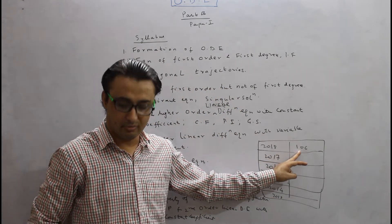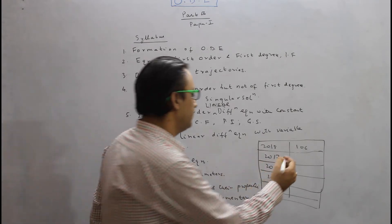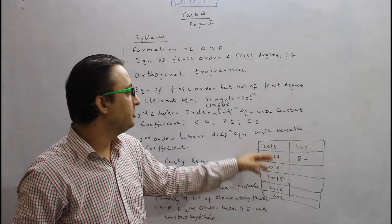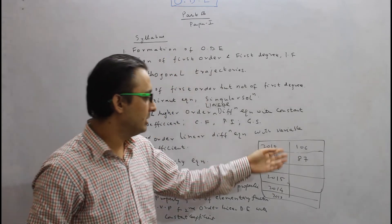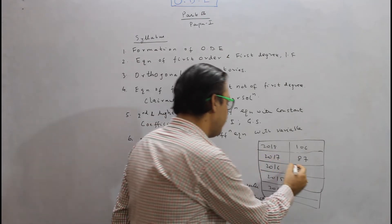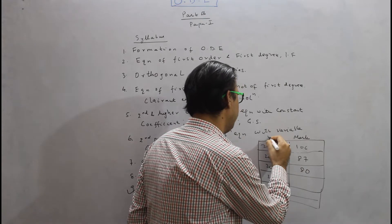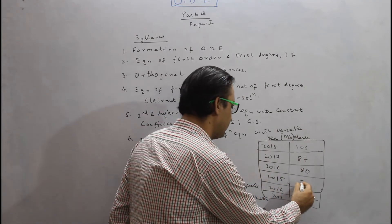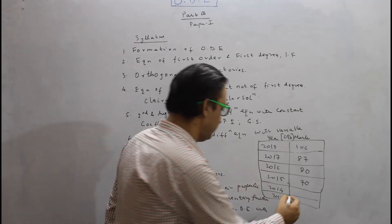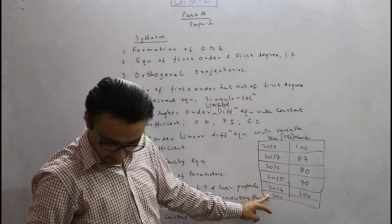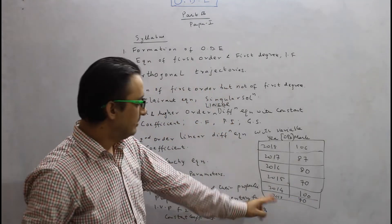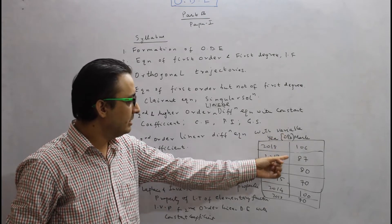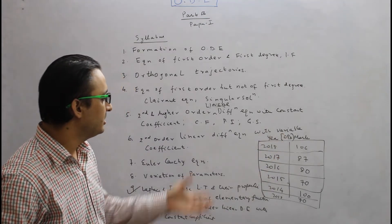In 2018 it was asked for 106 marks, and in 2017 for 87 marks. This area carries a lot of weightage, and if done methodically you can score these marks very easily. In 2016 the question was asked for 80 marks, in 2015 for 70 marks, in 2014 for 100 marks, and in 2013 for 70 marks. Especially in 2018, the marks have drastically increased.